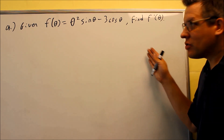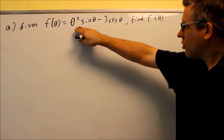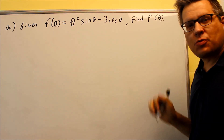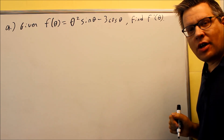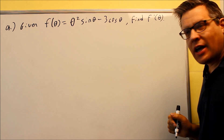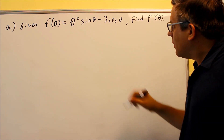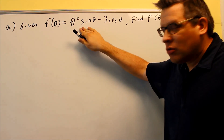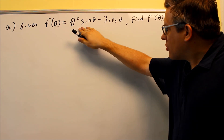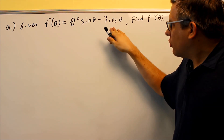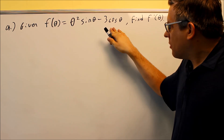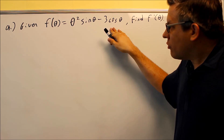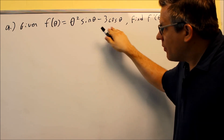For this example, what you should notice is in the first term, there's two things being multiplied together. So because of that, you're going to have to apply a product rule to this first one, and this one will just apply the derivative directly as we've done before in a previous example.